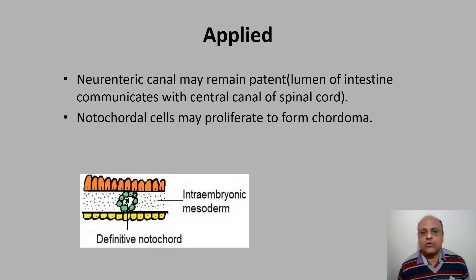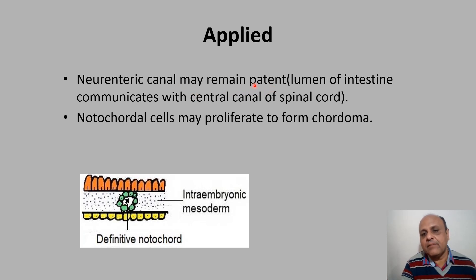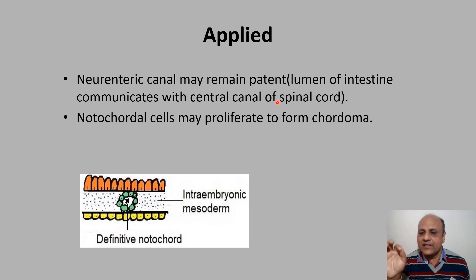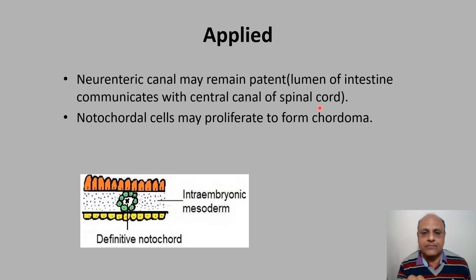Regarding the applied anatomy of notochord: during formation of the notochord, a neuroenteric canal is formed. If this canal remains patent, the lumen of the intestine (derived from endoderm) will communicate with the central canal of the spinal cord (derived from ectoderm) — so the neuroenteric canal joins nervous tissue with intestinal tissue. Additionally, notochordal cells may proliferate to form a tumor known as a chordoma.